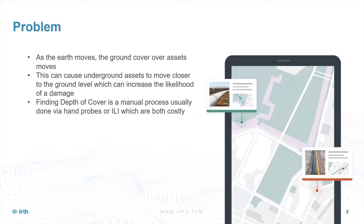When we drill into what we've heard, this is what we keep hearing: there's earth movement, and as the earth moves, ground cover over assets changes over time. That ground cover can increase or decrease the likelihood of issues on pipelines and underground assets. One of the biggest challenges in the industry is that it's a very expensive process to determine depth of cover right now — done manually via hand probes or ILI runs, which carry a massive cost.